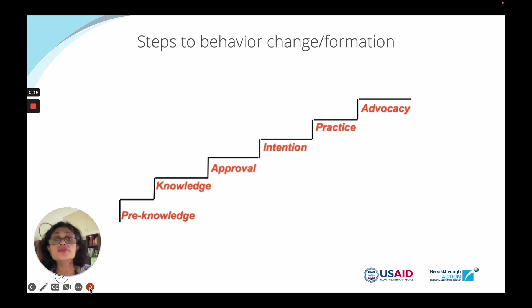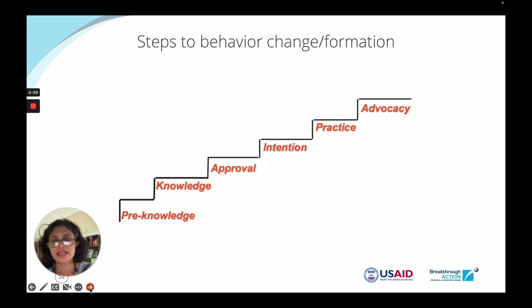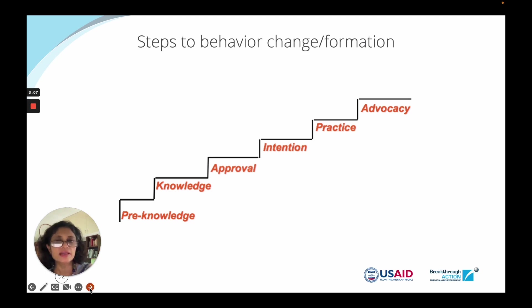Approval is of two kinds. One is approval of the method of protection — we're suggesting mask wearing as a way to protect yourself from COVID-19. Once they approve that, they also have to think that the people around them approve or disapprove of this practice. Is there social support, or do people make fun of people wearing masks and think they're weak? Social approval, or community approval from their peers, is very important — as important as approval of the method or the intervention we're asking people to perform.